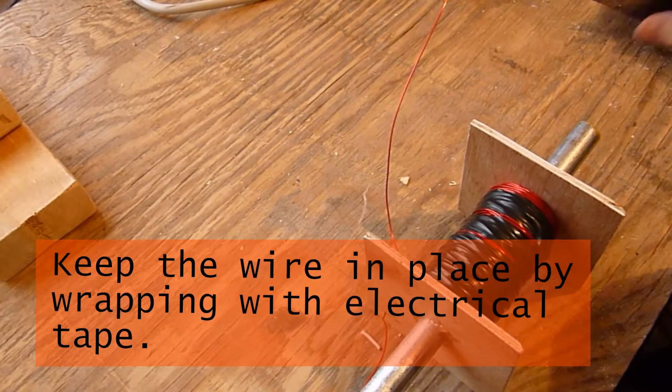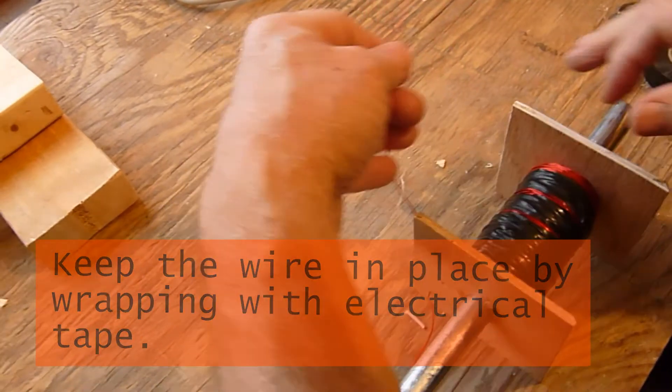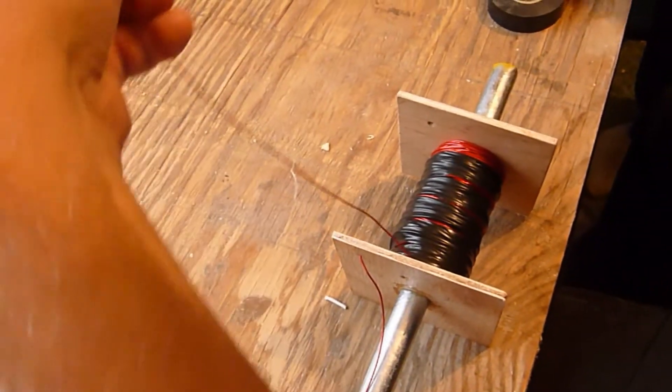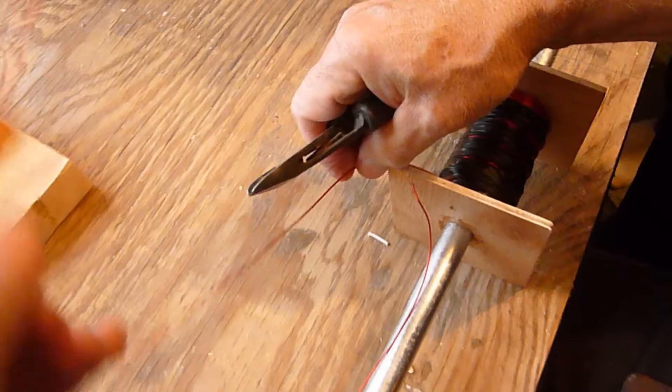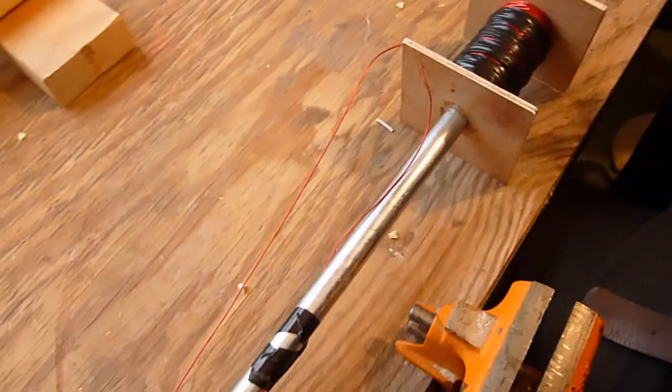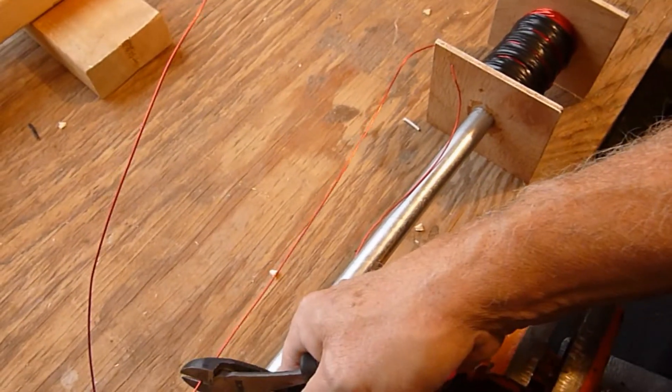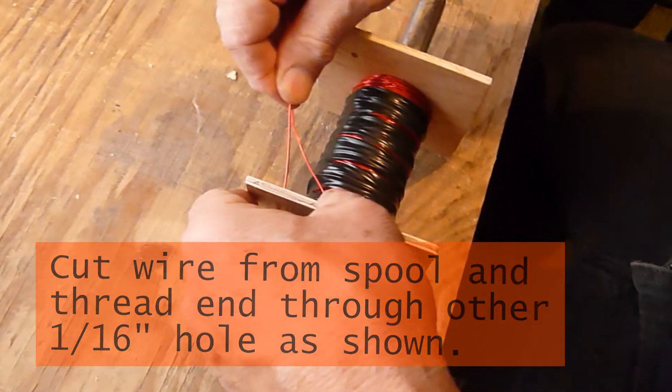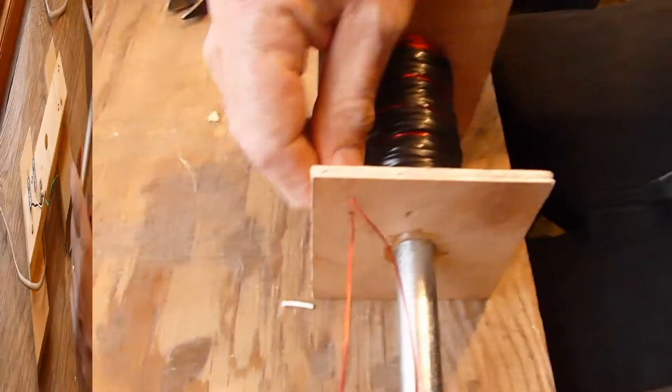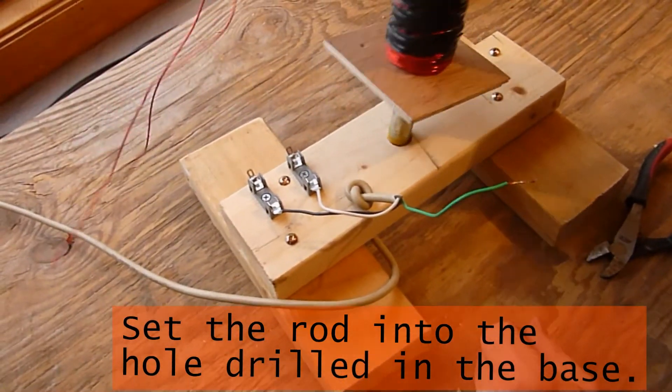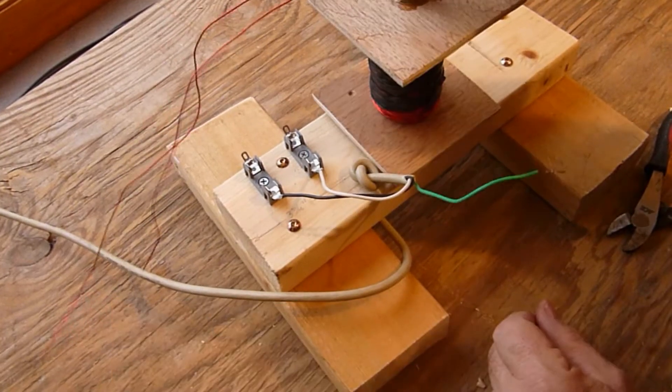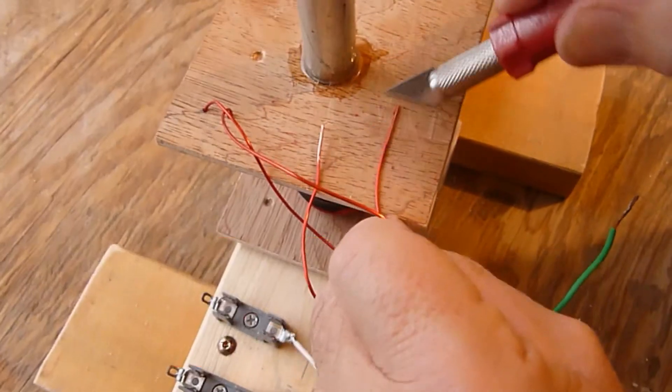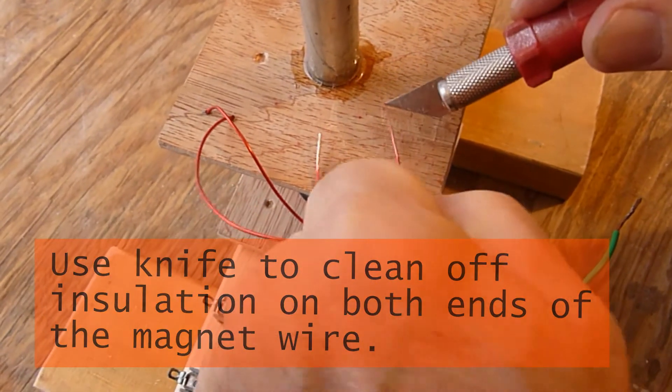Once you are done wrapping the wire keep it in place by wrapping it with electrical tape. Cut the wire leaving about a foot of excess wire length and thread the wire through the remaining 1/16 inch hole in the wood. Set the rod into the hole drilled in the base.